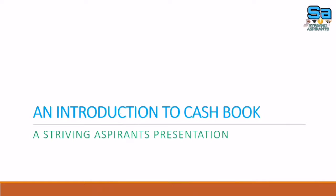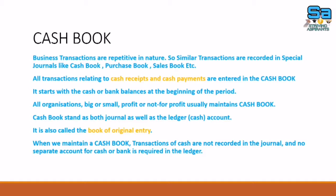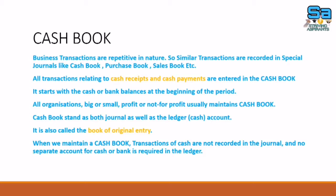Welcome back to Striving Aspirants. Today we are going to discuss an important topic from accounting, that is cash book. There are numerous transactions that occur in an organization. Transactions that are similar in nature will be put into one book, called special purpose books — whether related to cash, purchase, purchase returns, sales, sales returns, etc. Here we are going to discuss one of the special purpose books, which is the cash book.